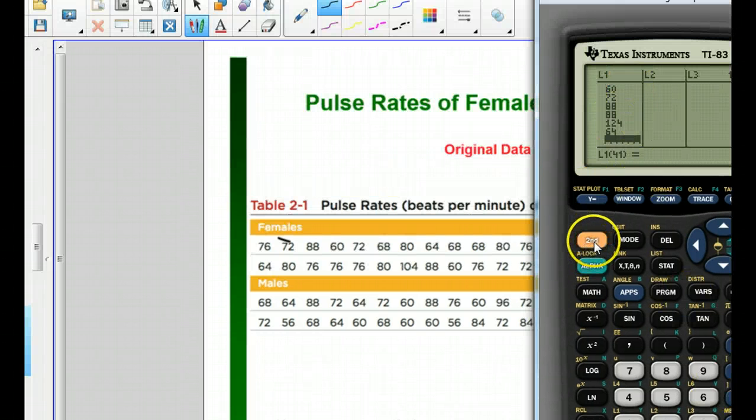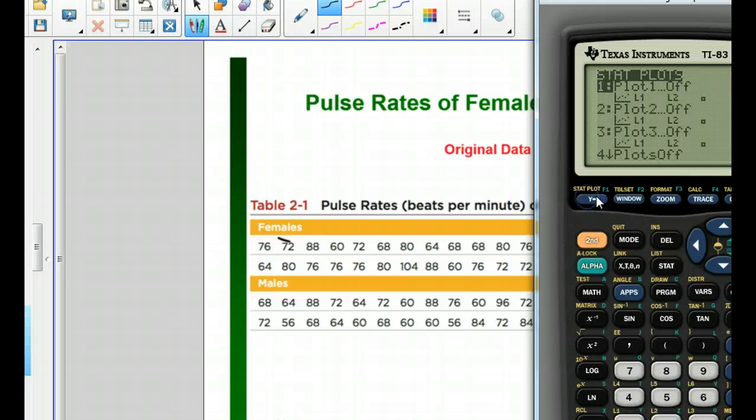I'm going to press the second button right here, second, Y equals. If you look above Y equals, it says stat plot. So this is the thing that will plot what you have in your stat editor.